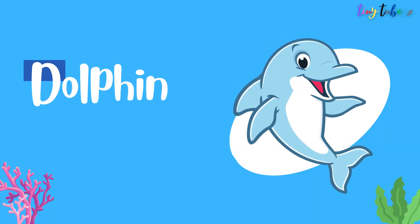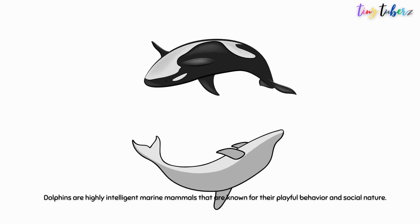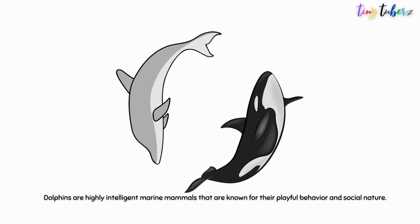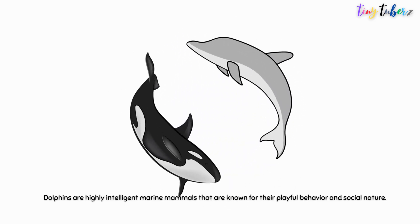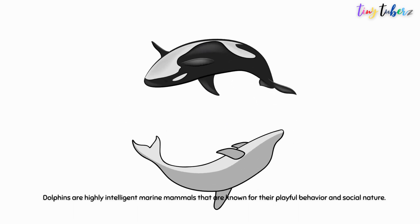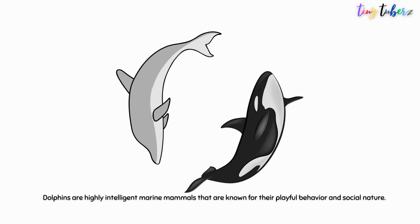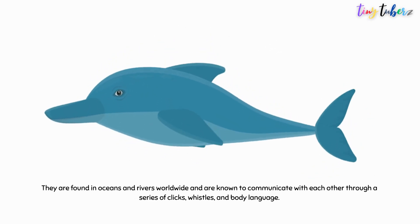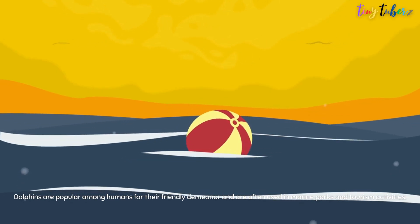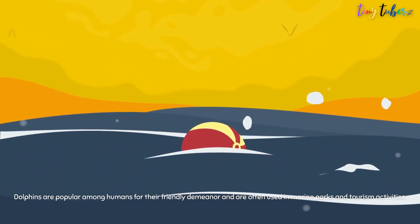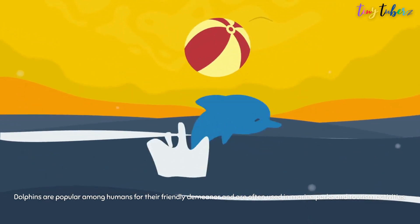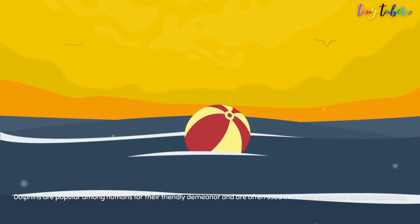Dolphins are highly intelligent marine mammals that are known for their playful behavior and social nature. They are found in oceans and rivers worldwide and are known to communicate with each other through a series of clicks, whistles, and body language. Dolphins are popular among humans for their friendly demeanor and are often used in marine parks and tourism activities.